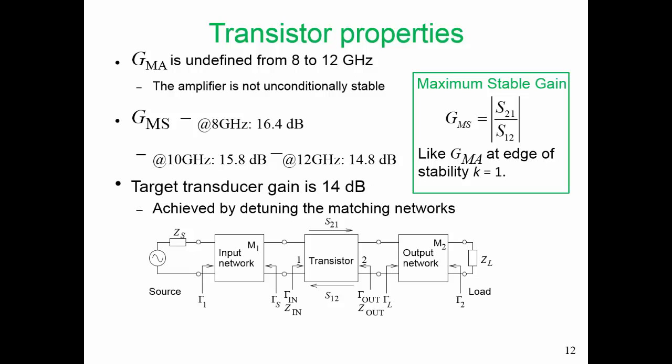Now let's consider the particular properties of our transistor. When we plug in the S parameters for our transistor, we find that GMA is undefined from 8 to 12 gigahertz because our amplifier is not unconditionally stable. Therefore, we need to use the maximum stable gain. Calculating that out: at 8 gigahertz the maximum stable gain is 16.4 dB; at 10 gigahertz it's 15.8 dB; at 12 gigahertz it's 14.8 dB. Just as we expected, the gain does fall off with frequency. Our target transducer gain is 14 dB, and we clearly have a maximum stable gain that is greater than that at 8 gigahertz.